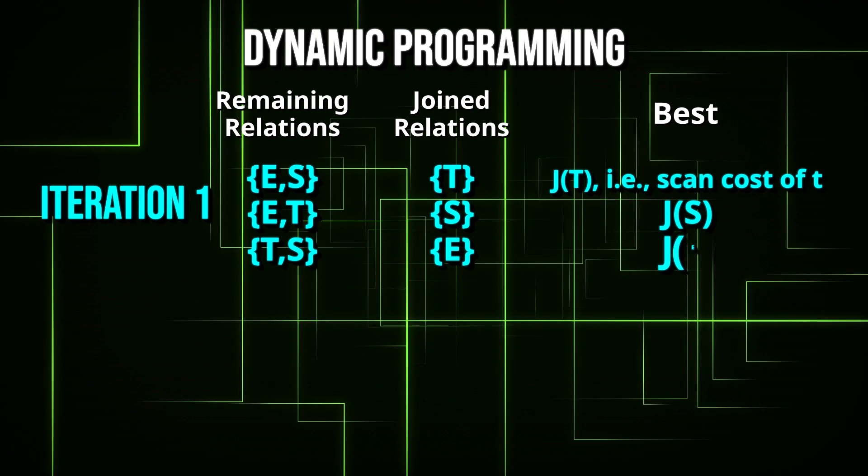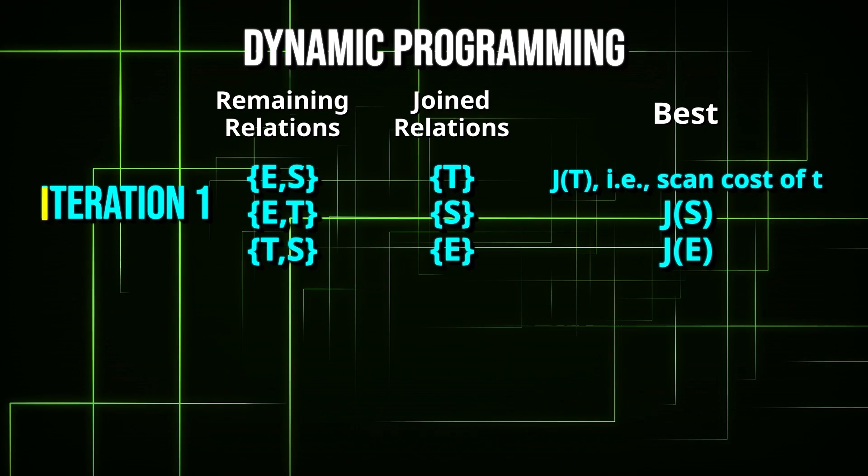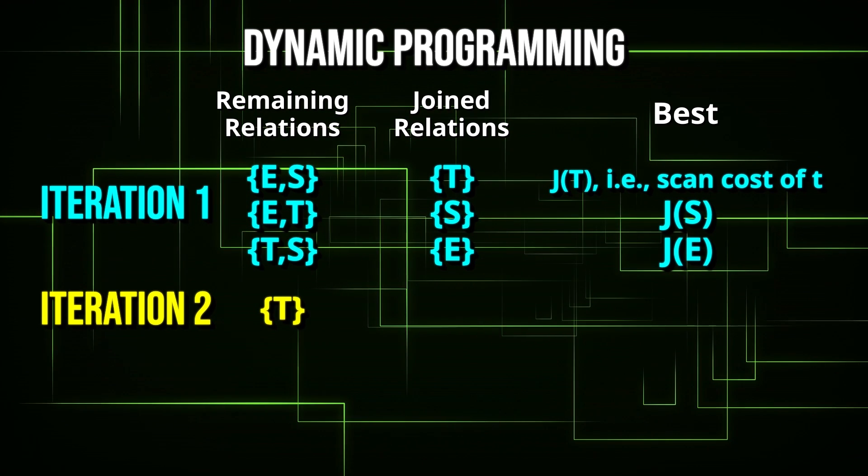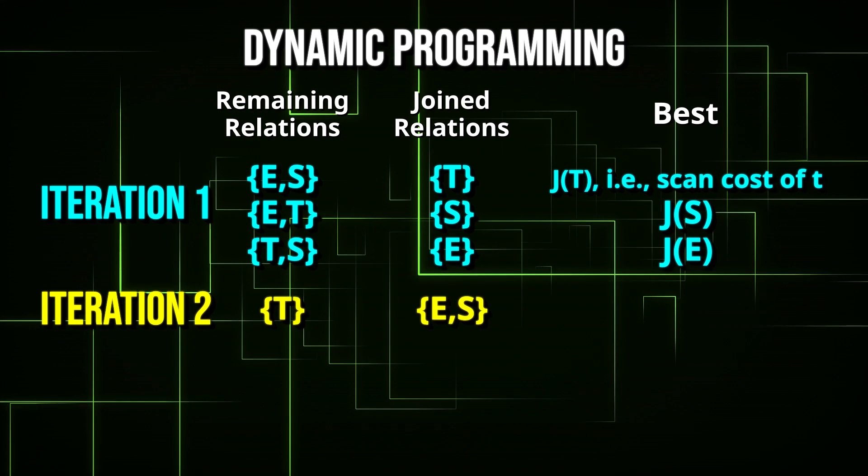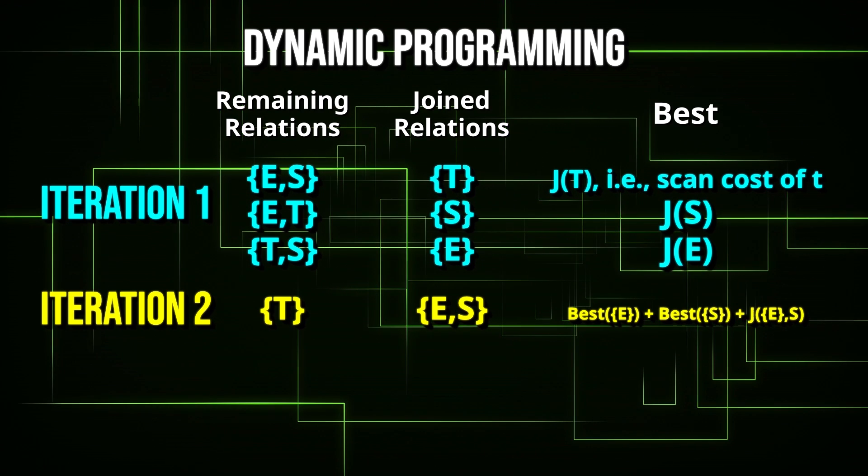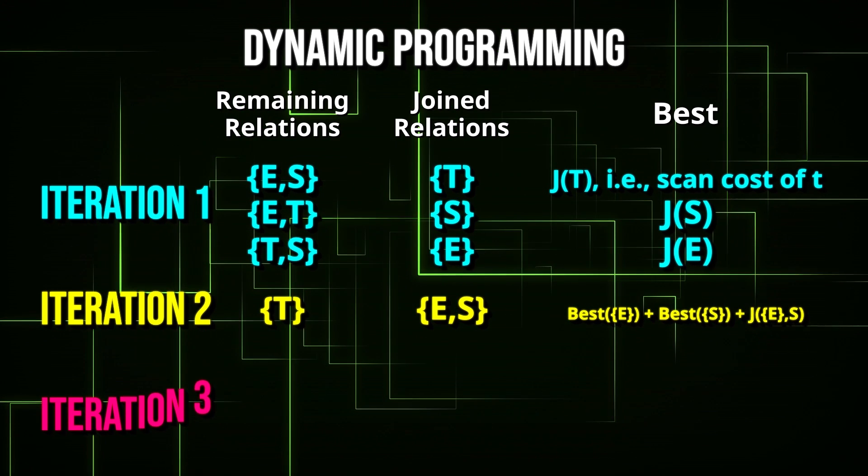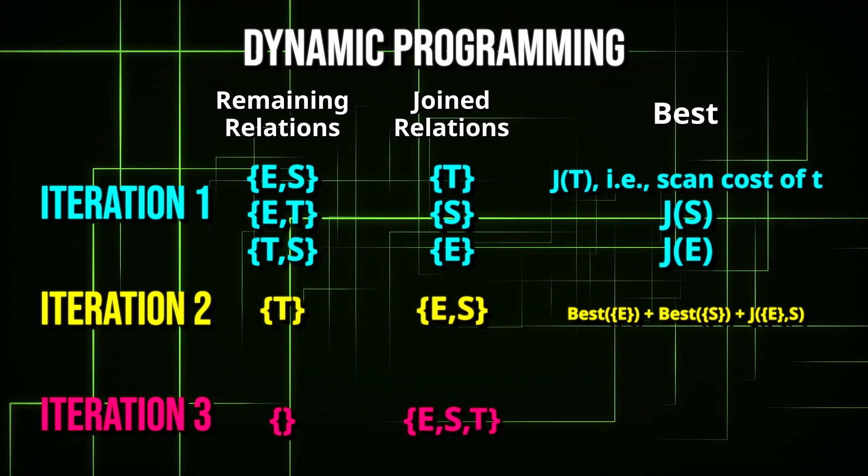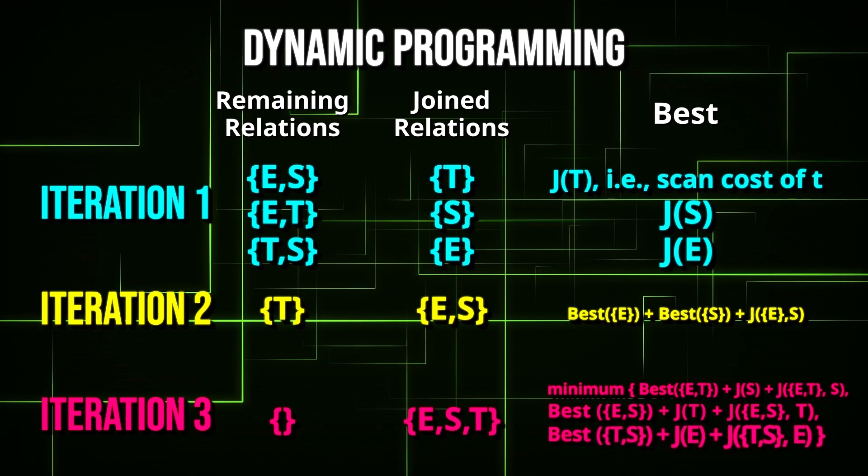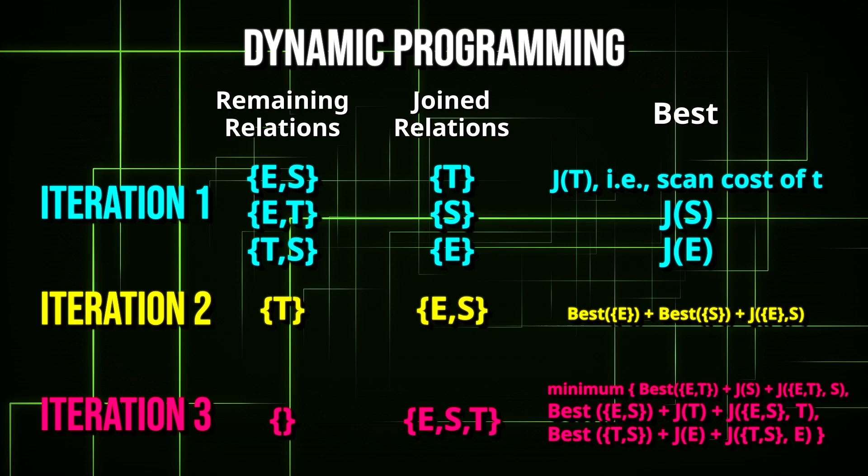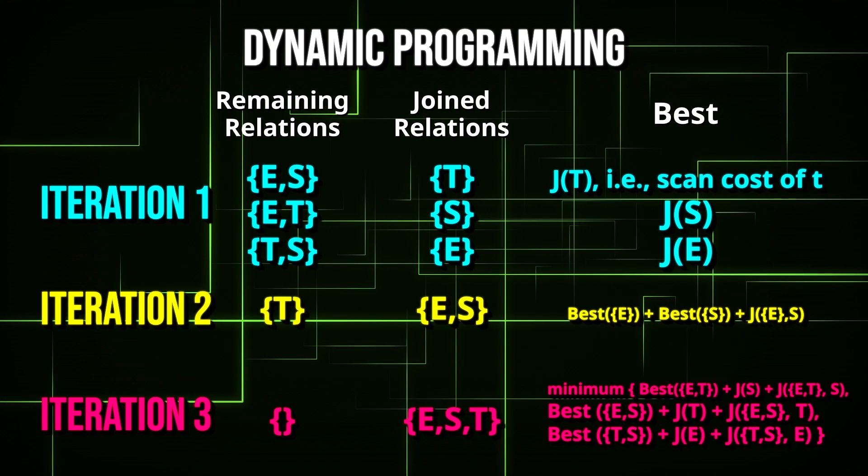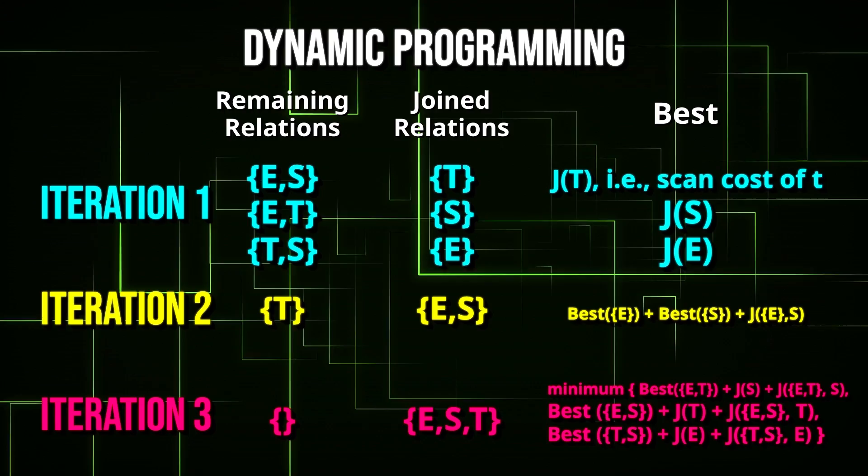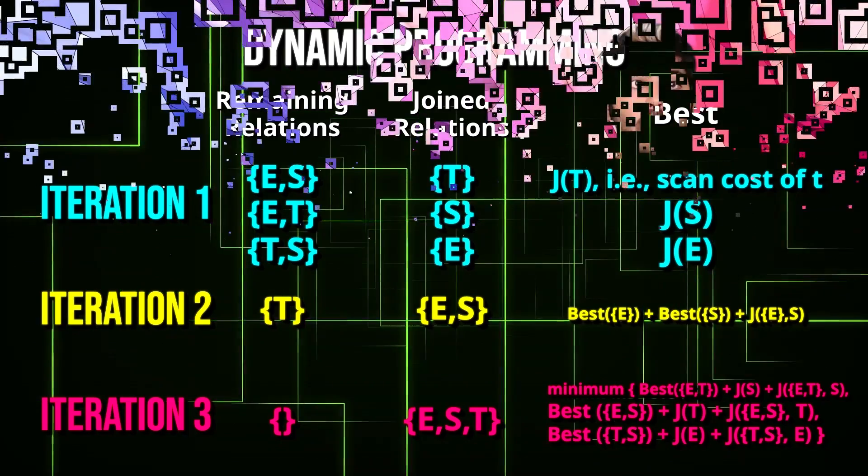Using dynamic programming, we can iteratively calculate the cost of optimally accessing the three base relations. After the first iteration, we can build off of this information that we previously computed, and enumerate all two relations. When we compute the best cost to join two relations, we'll look up the relevant, previously computed results. And in the third iteration, we'll proceed through the other two relation sets, eventually finding the final best cost for joining all three tables.